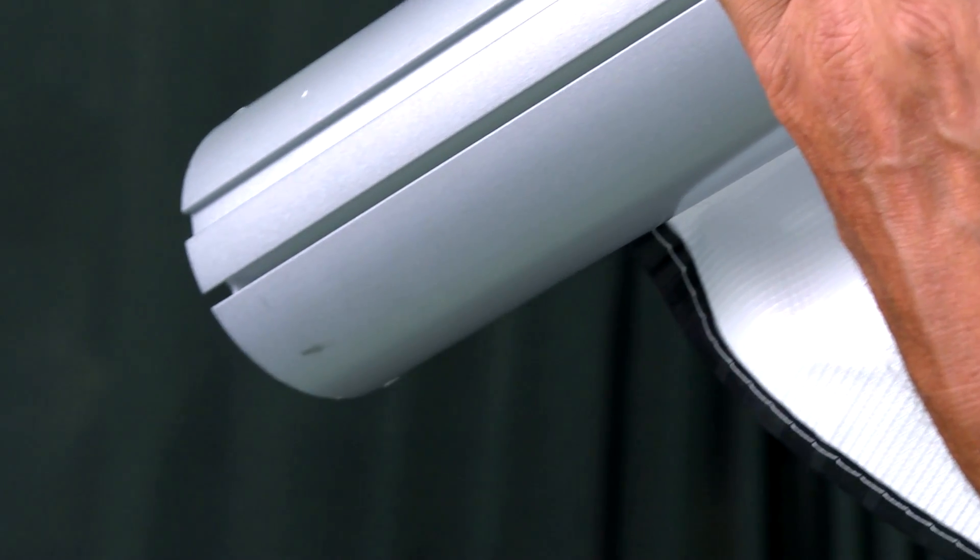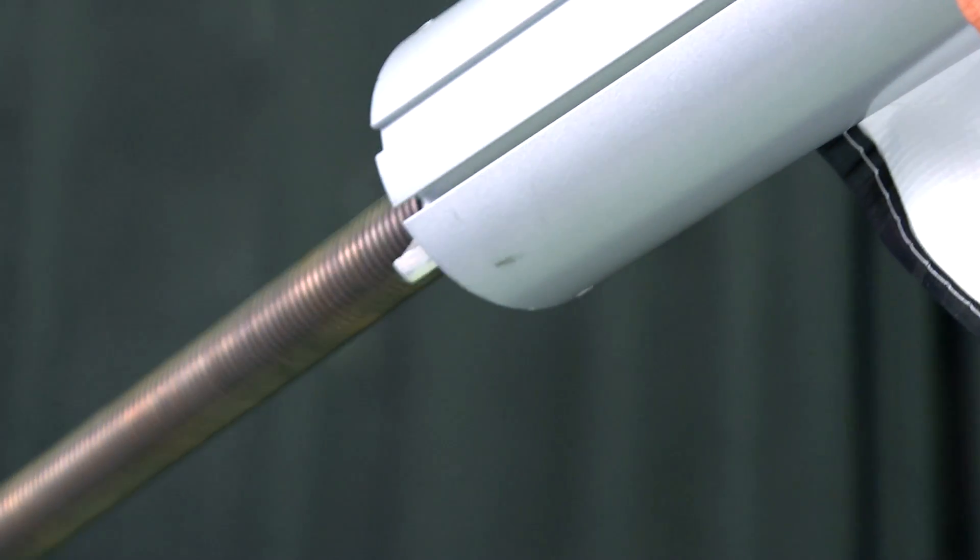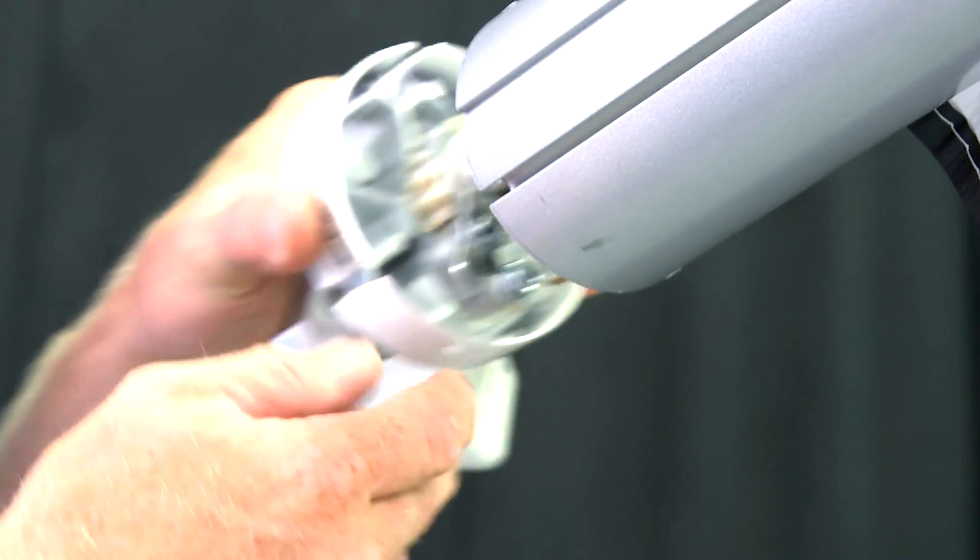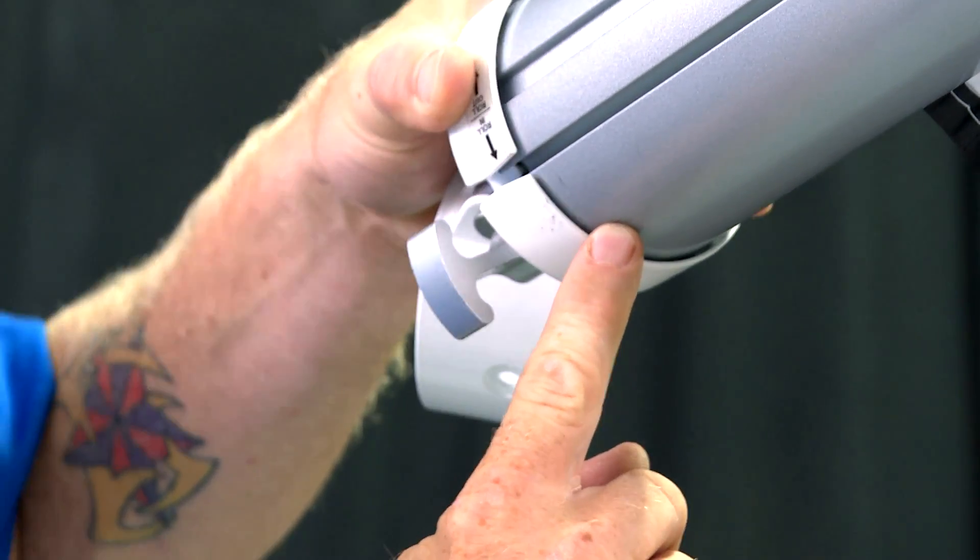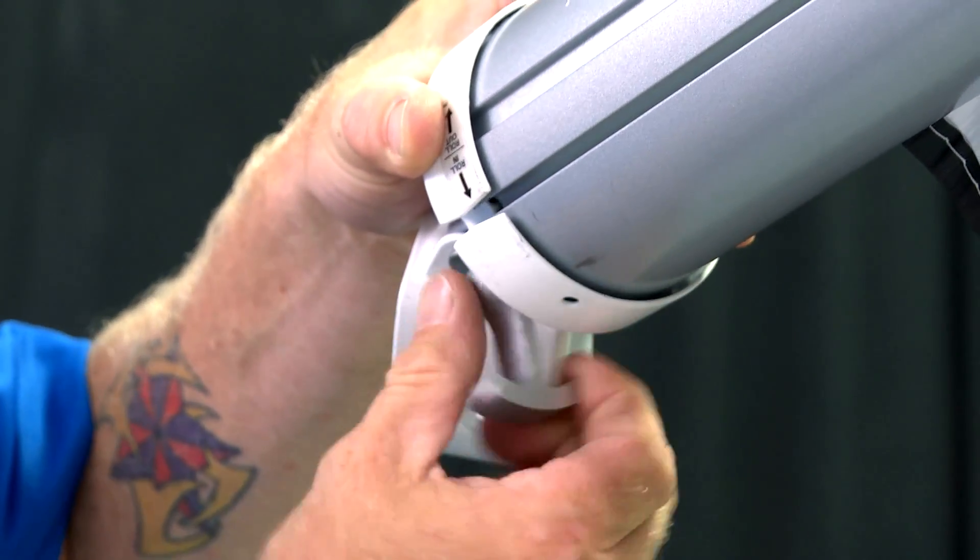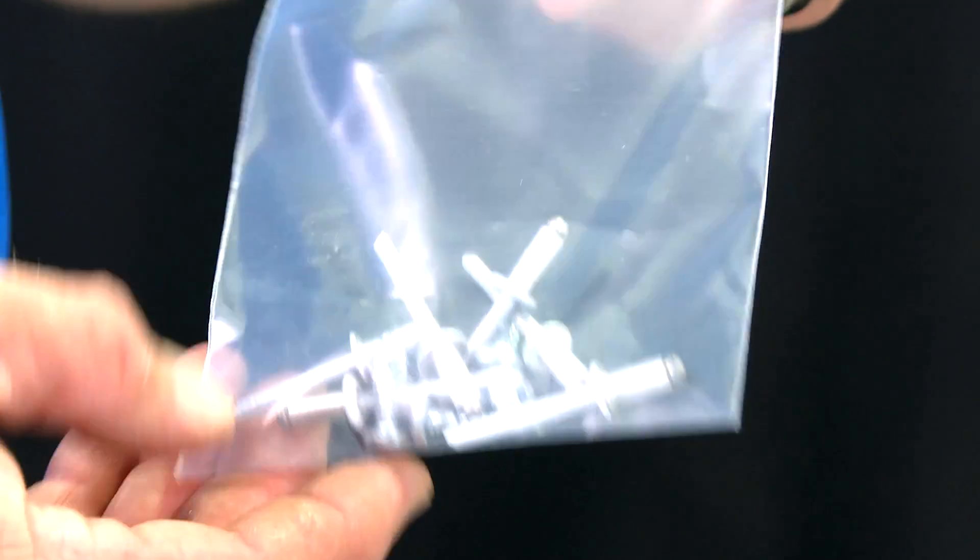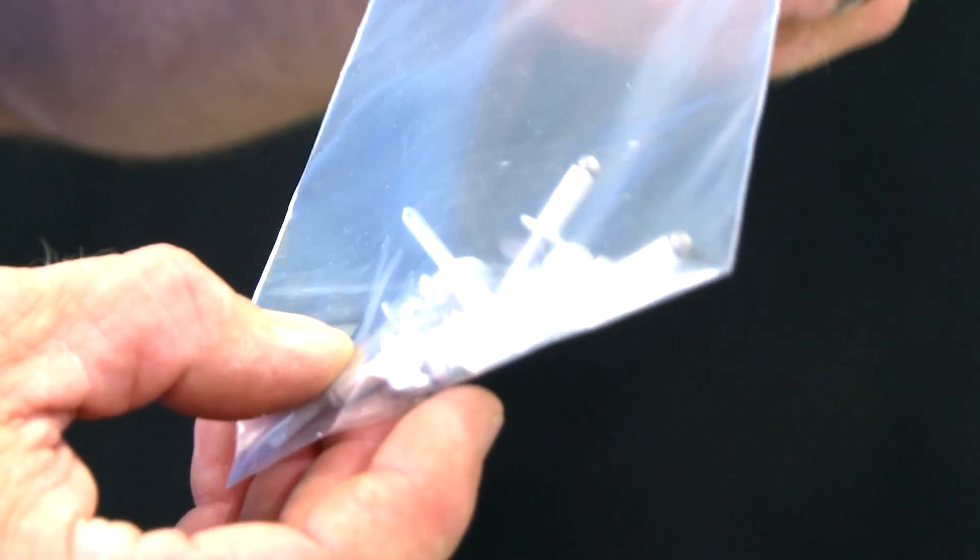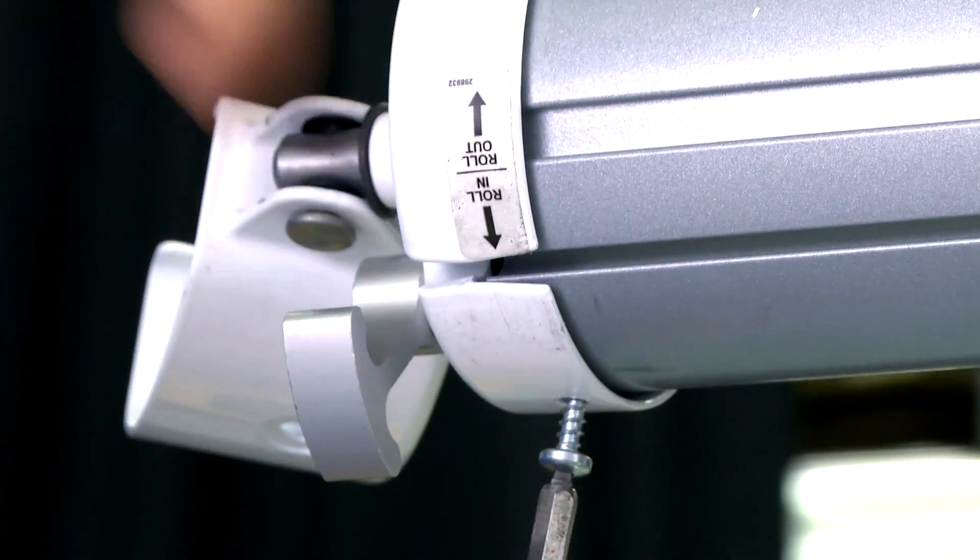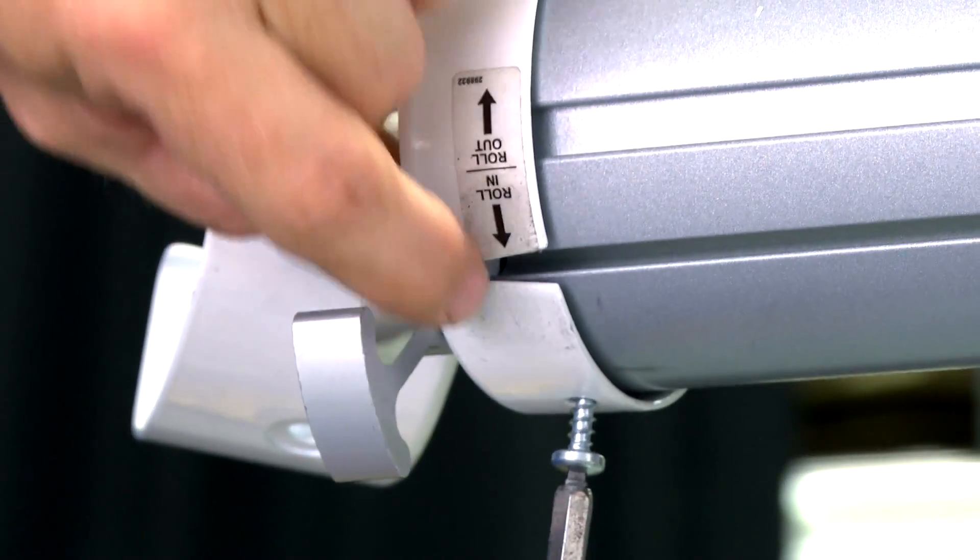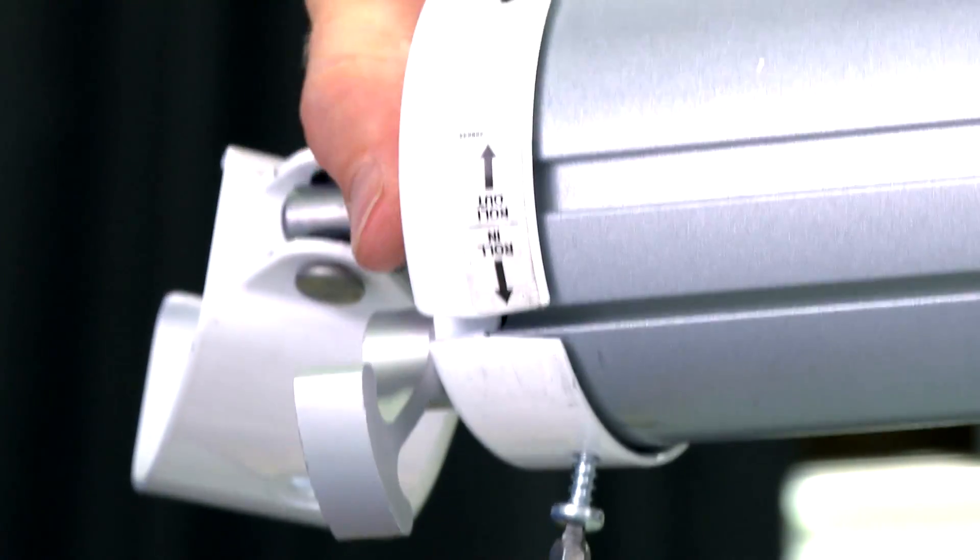Now insert the new spring assembly into the roll tube. Make sure that you align the new spring assembly cam lock lever with the mark you placed on the roll tube earlier. Make sure that the end cap is pushed all the way on. Now, using either screws or rivets, which are both included in the kit, attach the new end cap to the roll tube. In this case, the screws. Make sure that you cannot see any daylight between the end cap and the roll tube.